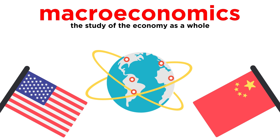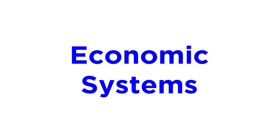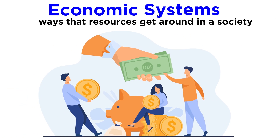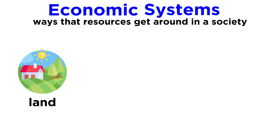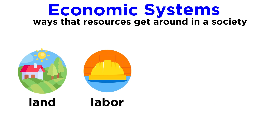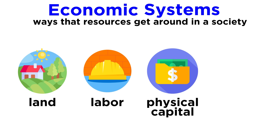Any study of macroeconomics often begins by looking at economic systems. An economic system is a way that resources get around in a society. Economic systems regulate the factors of production that we've been discussing: land, labor, physical capital, and human capital.